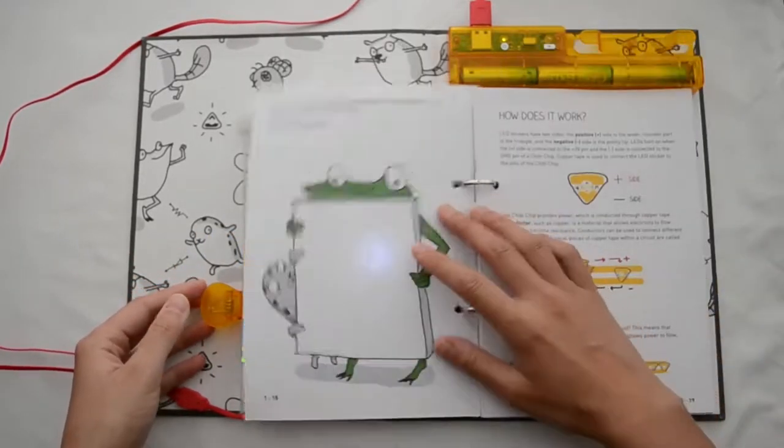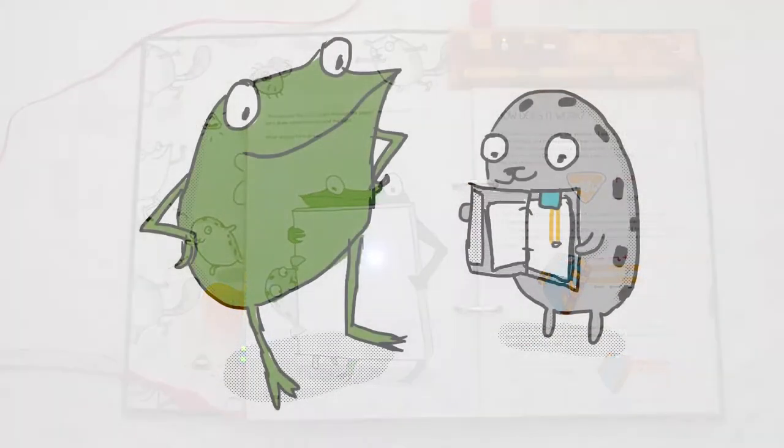It's a book where we learn about circuits and programming with our new friends like Fern the Frog and Sammy the Seal.